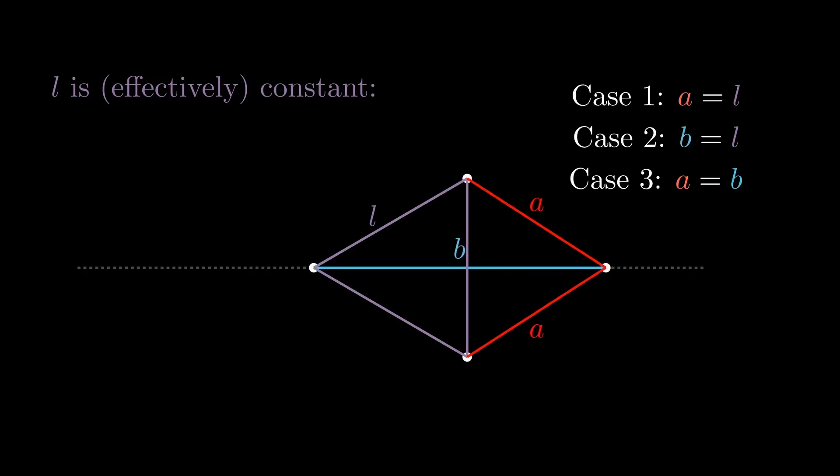Moving further left, we hit our second configuration, a sort of kite shape. This meets case 2, B equals L. Now moving inside the triangle, our third configuration has the fourth point in the center of the triangle, and so it meets case 3, A equals B.